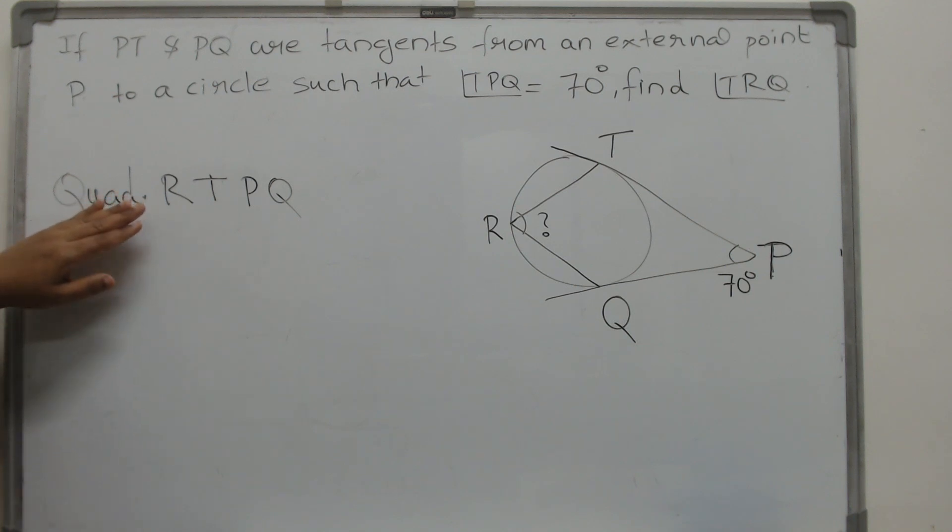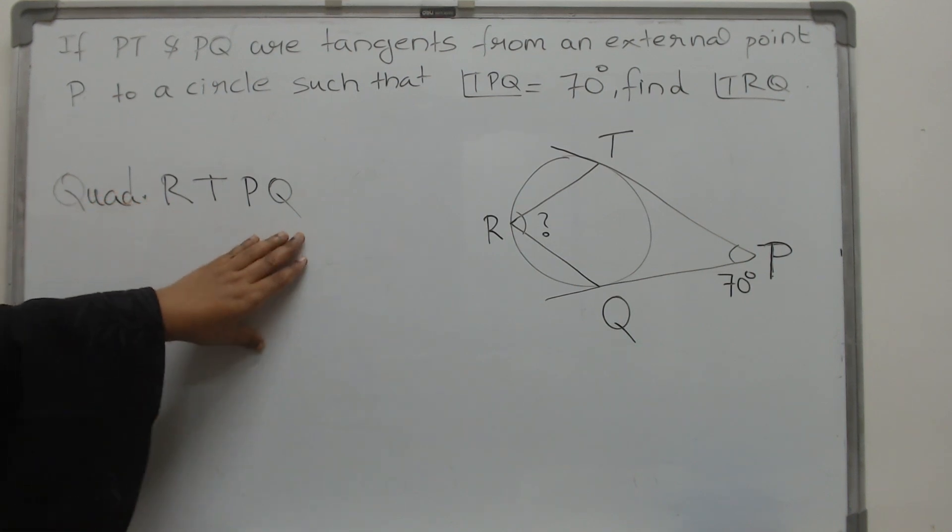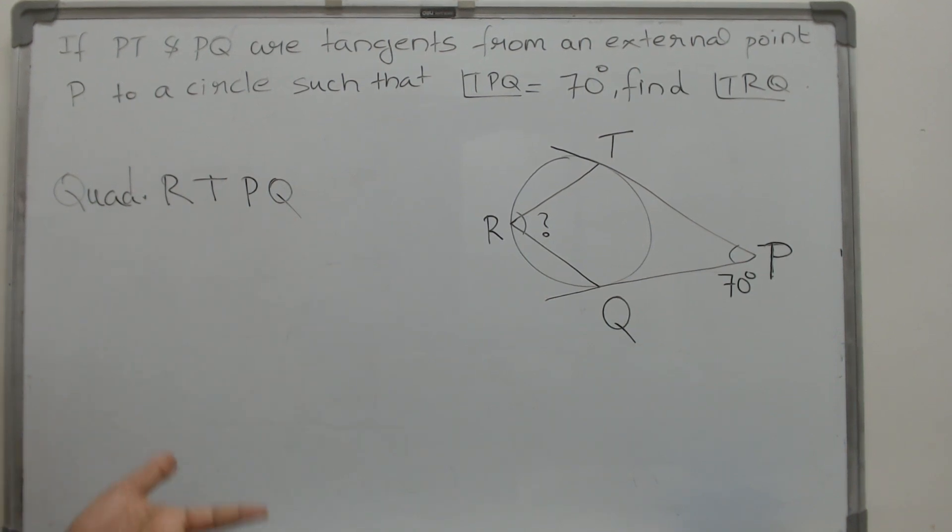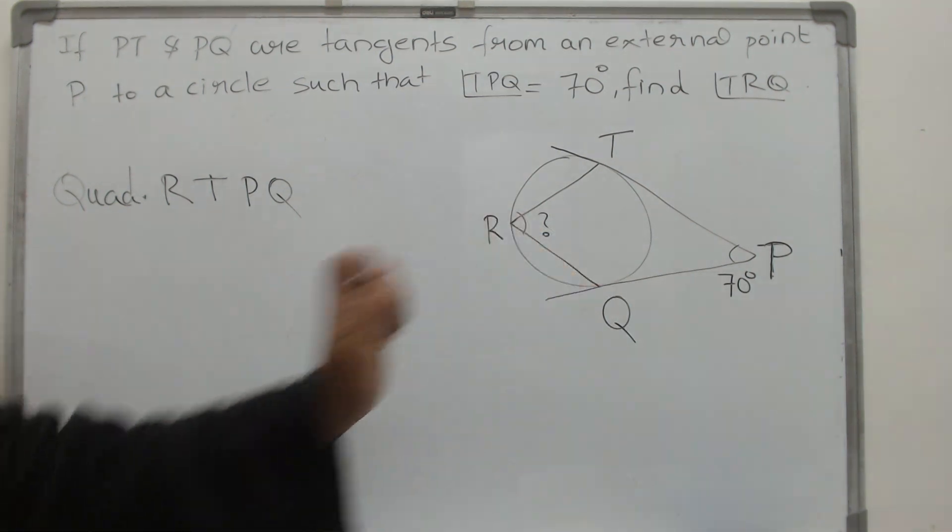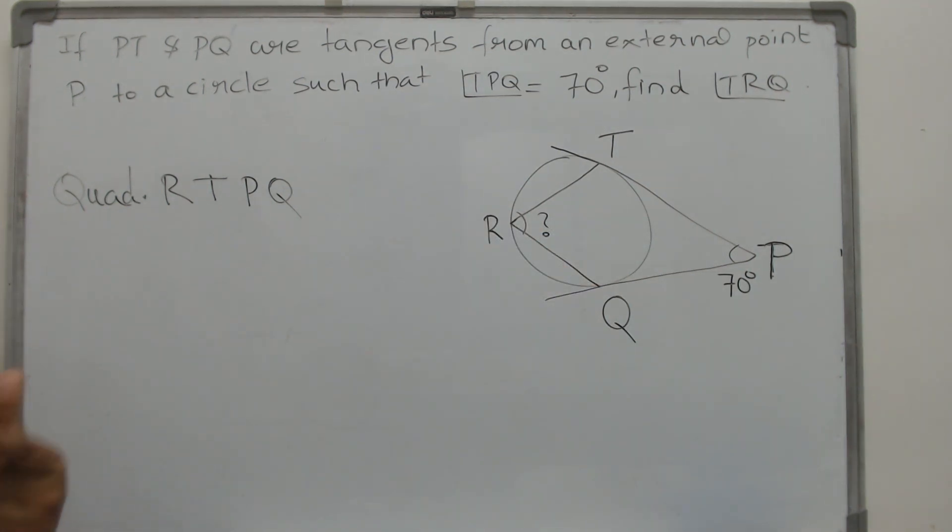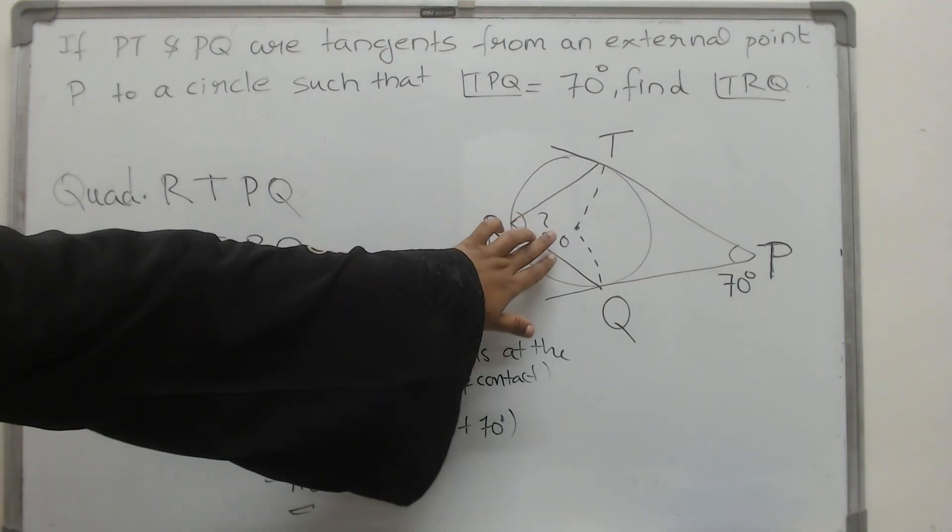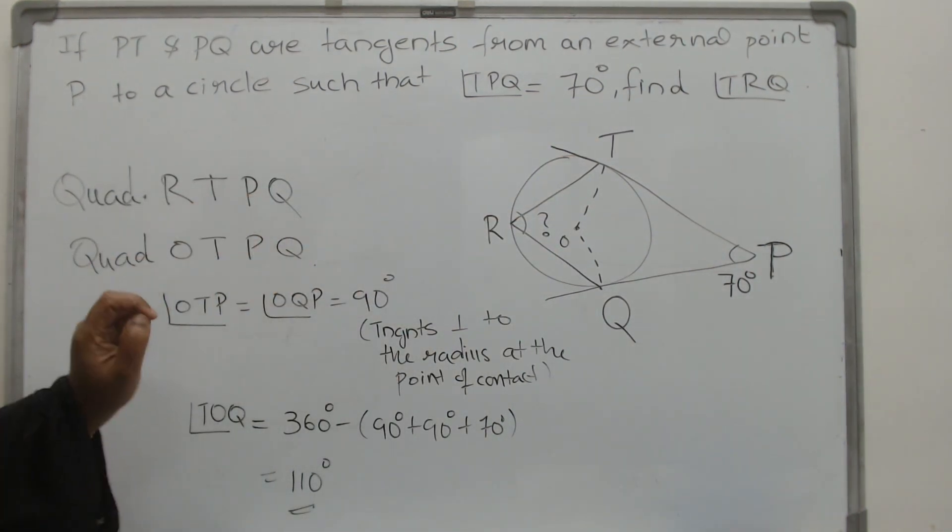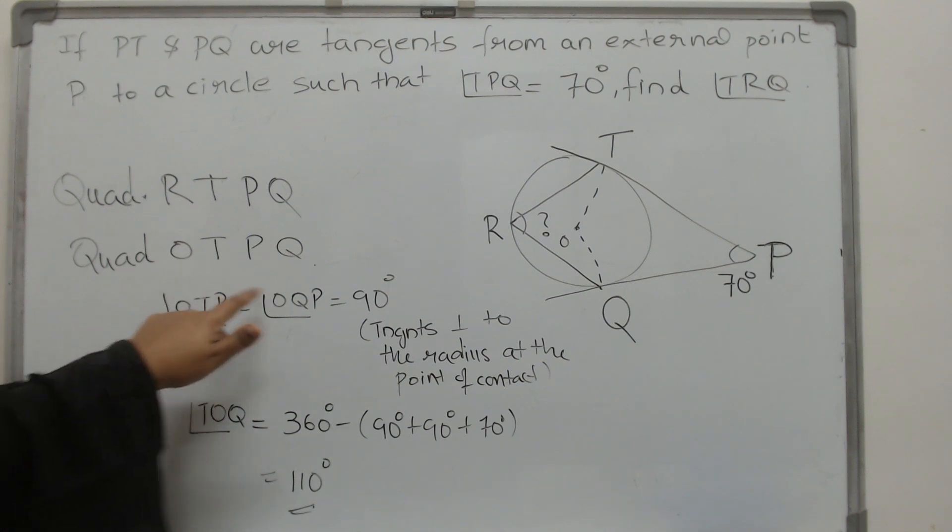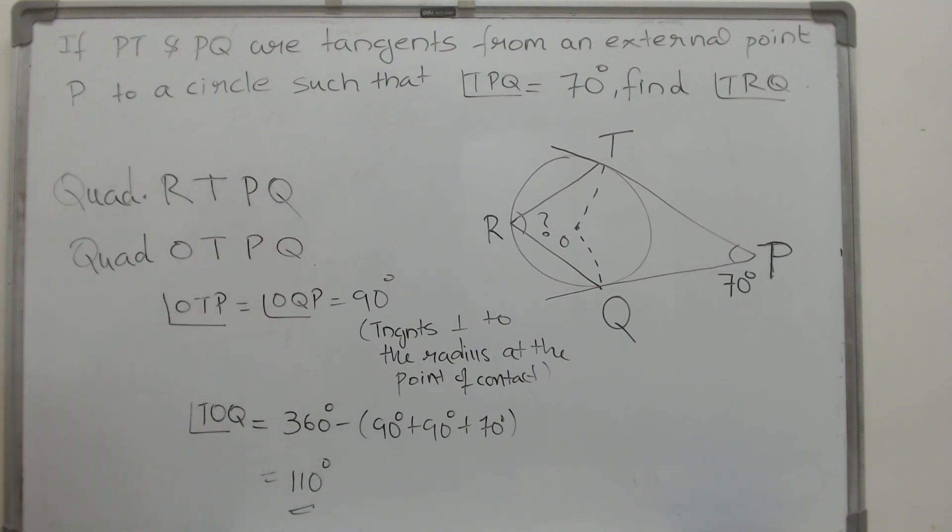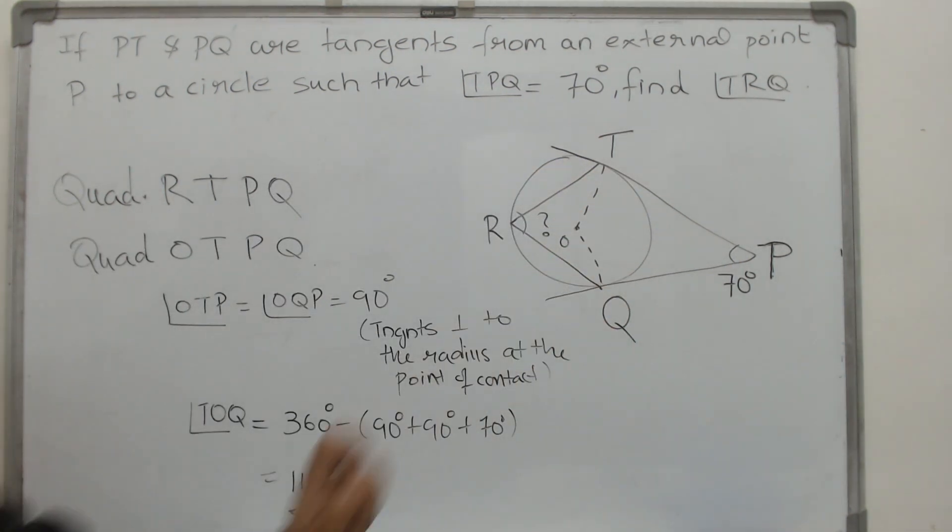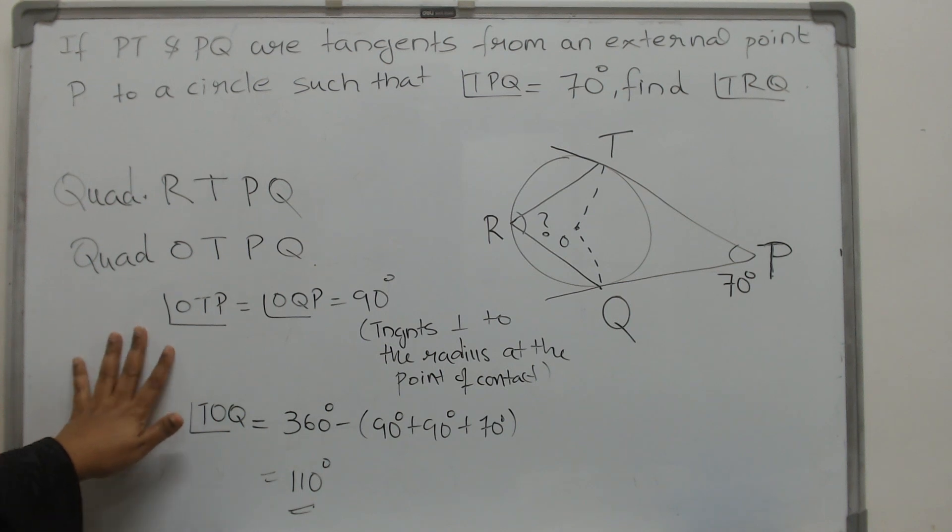Now if you consider the quadrilateral RTPQ, you will see that there is not enough information to proceed. We know just the value of P. So is there any way you can make a construction which will give you more values? What about we construct such a quadrilateral? Instead of considering RTPQ, why don't we consider OTPQ? Then we will have enough information, right? Why is that OTP and OQP are both 90 degrees?